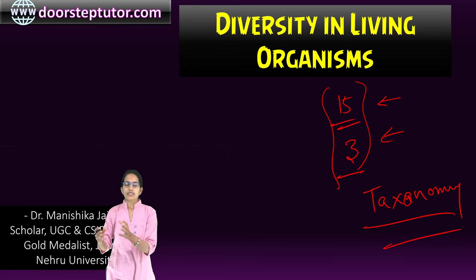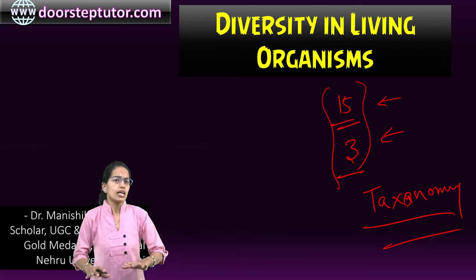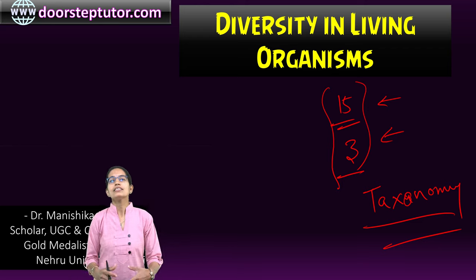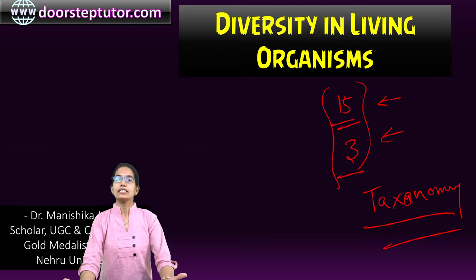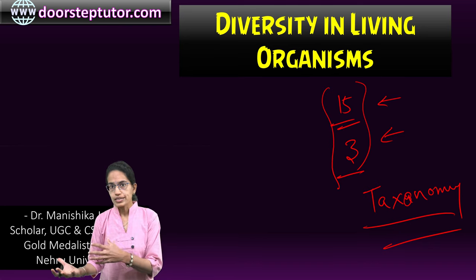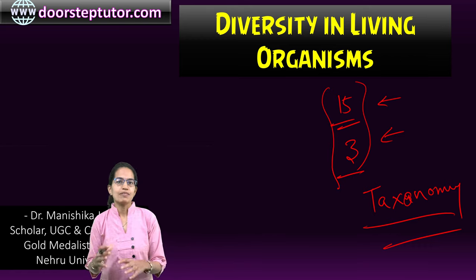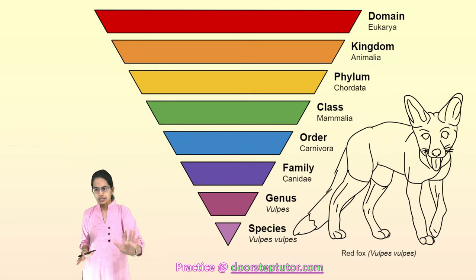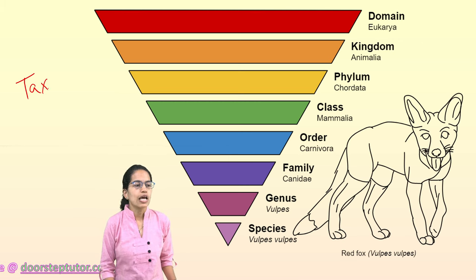We group similar genera under one group, and this is how we simplify the whole process of classification. In very simple words, we as an organism and cockroach belong to the same family of animals under the animalia classification. But do we have similarity in the circulatory system and nervous system between a cockroach and a human being? Definitely no. So how do we classify to make it simpler? Each category in this taxonomy chart is known as a taxon.